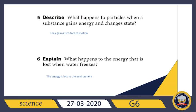Question five: what happens to particles when a substance gains energy and changes state? When particles gain energy, this energy increases the movement of the particles. They gain freedom of motion — they become more active and move in every direction.